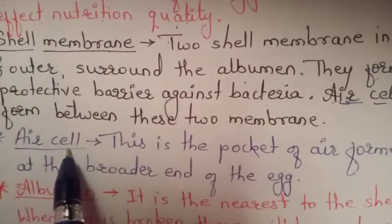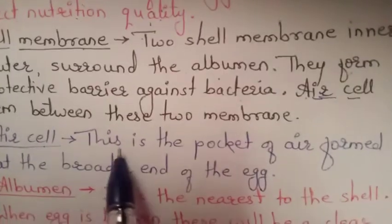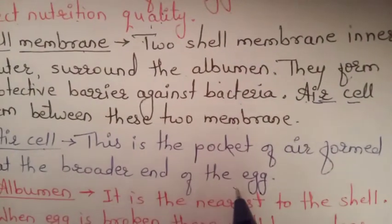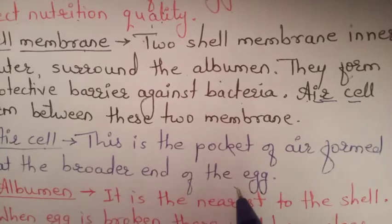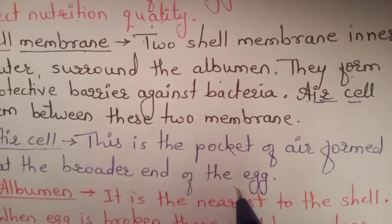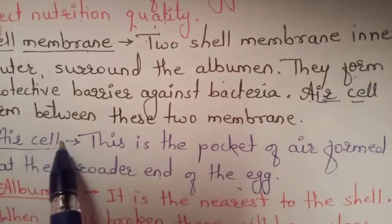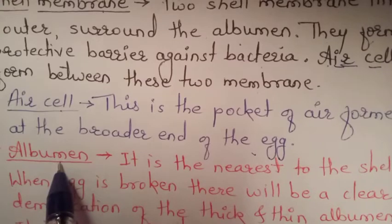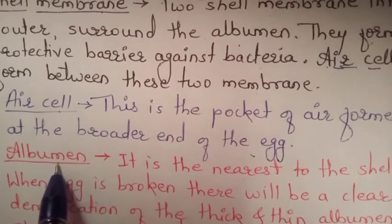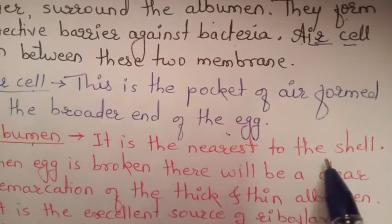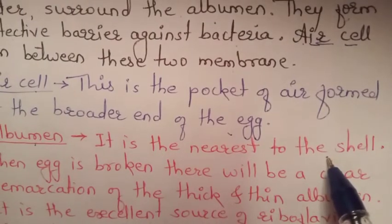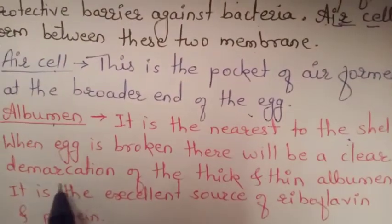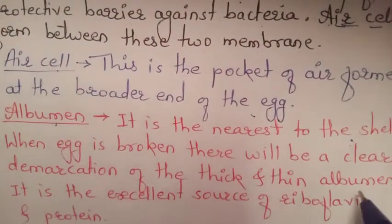The air cell is a pocket of air formed at the broader end of the egg. It is nearest to the shell. When the egg is broken, there will be a clear demarcation of thick and thin albumen.